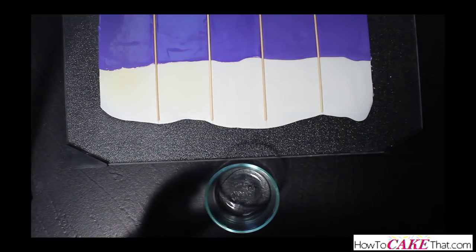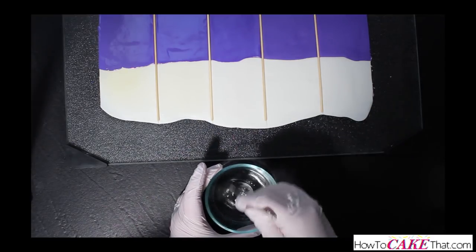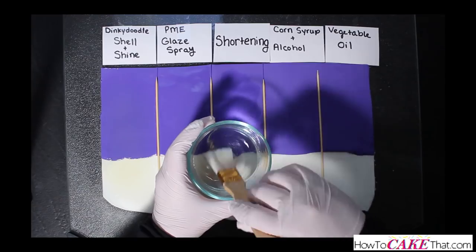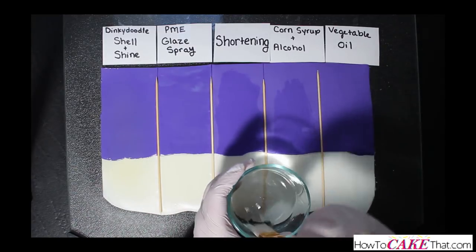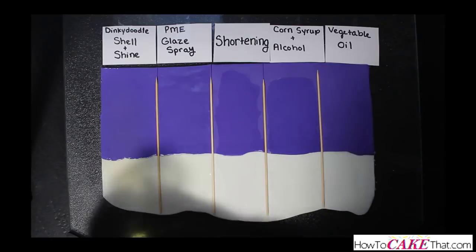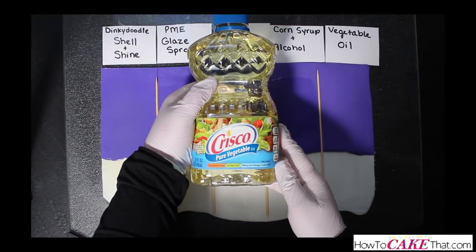I gave this mixture a good stir until the ingredients were well mixed together, then I used a medium-sized paintbrush to paint the glaze on the fondant.